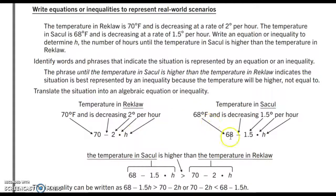Same thing with Sacul, starting off at 68 degrees, decreasing by a temperature of 1.5 degrees per hour. So, 1.5H. When we set that up, it's going to be set up as 68 minus 1.5 times H being greater than or higher than 70 minus 2 times H.